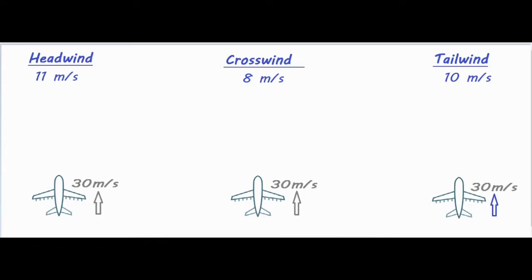A headwind is a wind that is hitting the head of the plane, which means it's blowing against the motion of the plane. A tailwind means it's pushing the back of the plane, so it's pushing in the same direction the plane is moving. A crosswind is one that is going either left or right, perpendicular, pushing the side of the plane. For this problem we'll say the crosswind is going to the right.